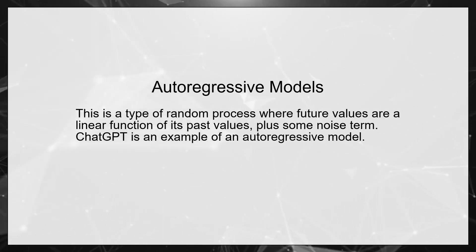Auto-Regressive Models. This is a type of random process where future values are a linear function of its past values plus some noise term. ChatGPT is an example of an auto-regressive model.